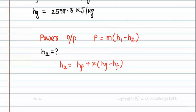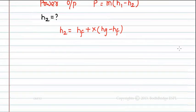Where HG is the enthalpy of the saturated vapour and HF is the enthalpy of the saturated liquid.